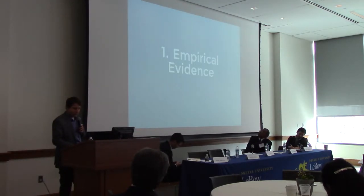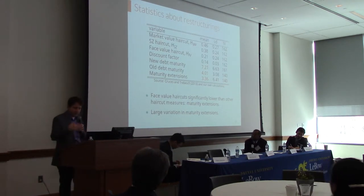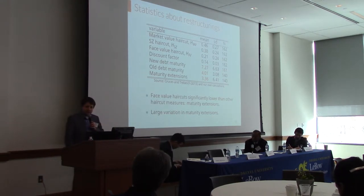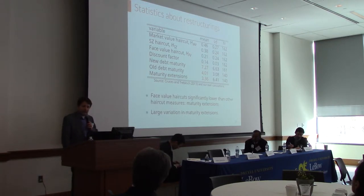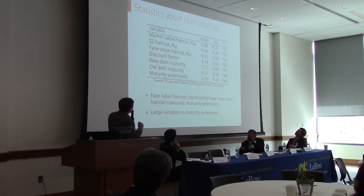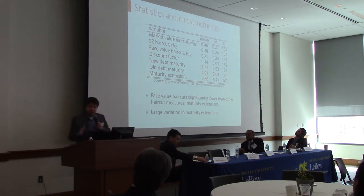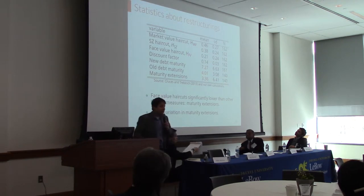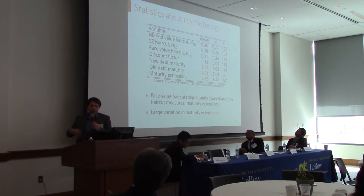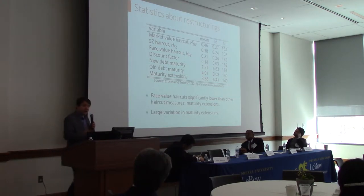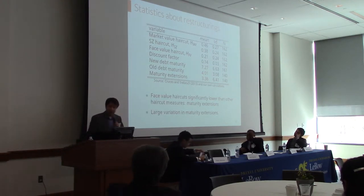Using data from Cruces and Trevesh with some formulas to back out maturity, we look at 162 episodes. The NPV haircut is around 40%, but the face value haircut — the reduction in payments without discounting — is around 20%. This means part of the haircut comes from extending the maturity of payments. Using formulas in the paper, we recover an average maturity extension of 3.4 years, with large dispersion.